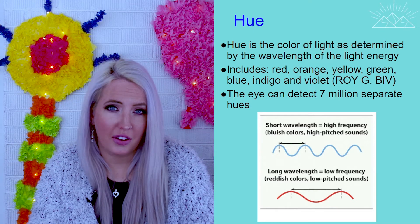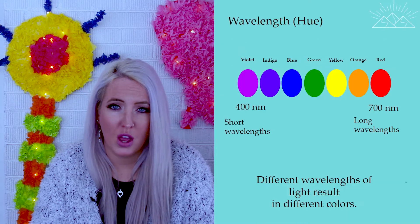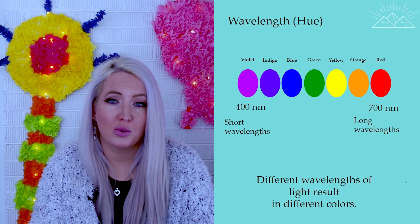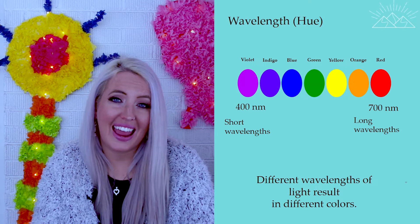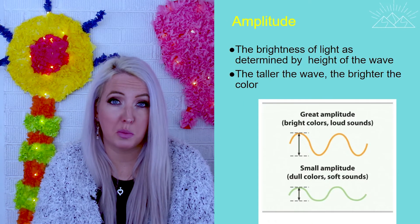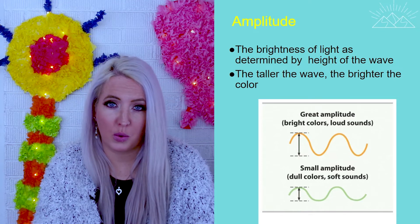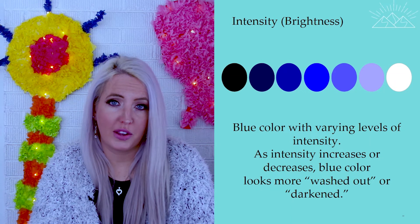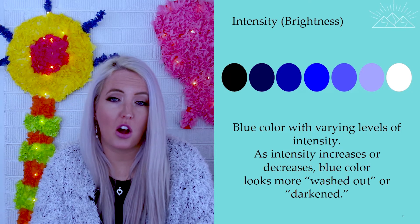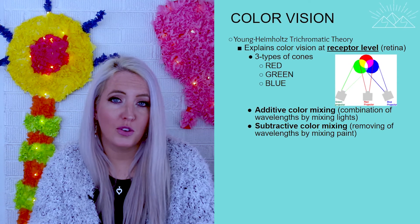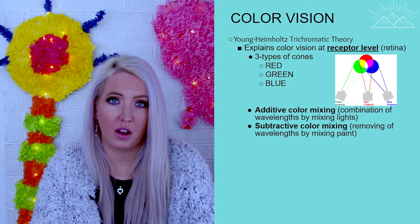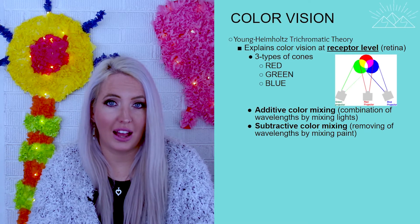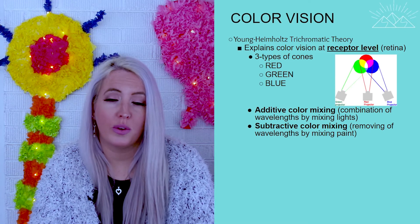Waves that are closer together are going to create our blues and purples. Waves that are further apart are going to create our yellows, oranges, and reds. So different wavelengths make up different colors. The amplitude, or the height of the wave, is what determines its brightness — high amplitude will be very bright colors, and low amplitude will create more dull colors. There are two theories of color vision that together help us understand how we see all of the colors we are able to see. The first one is called the Young-Helmholtz Trichromatic Theory of Color, and this one explains color vision at the retinal or receptor level.